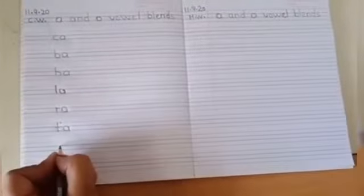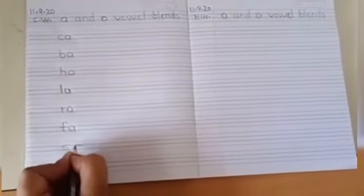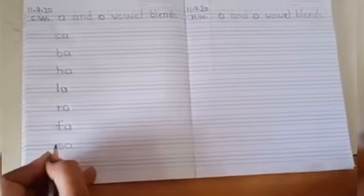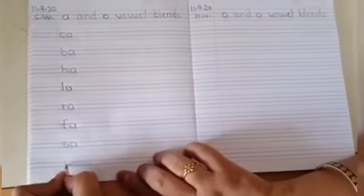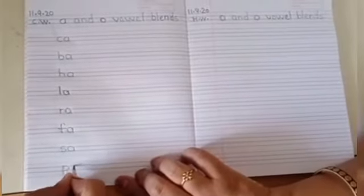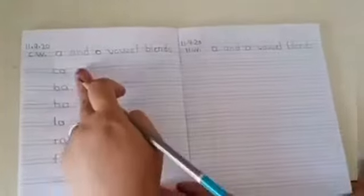Next you will write sa. And after sa, you will write pa. So these are A vowel blends.